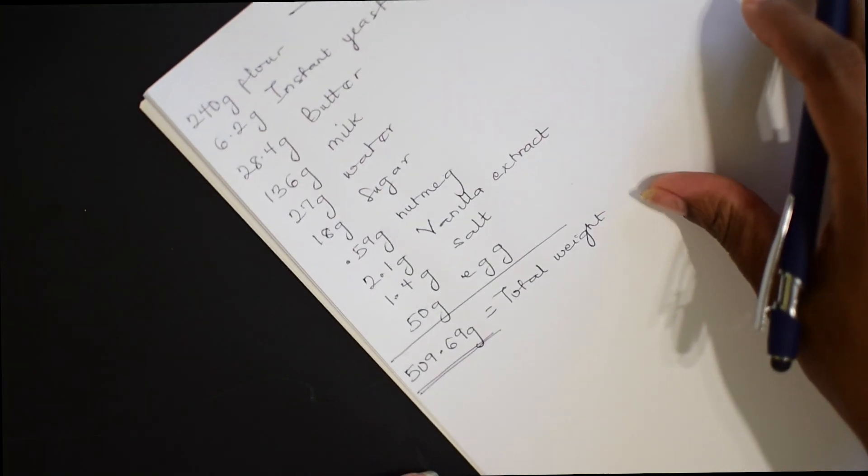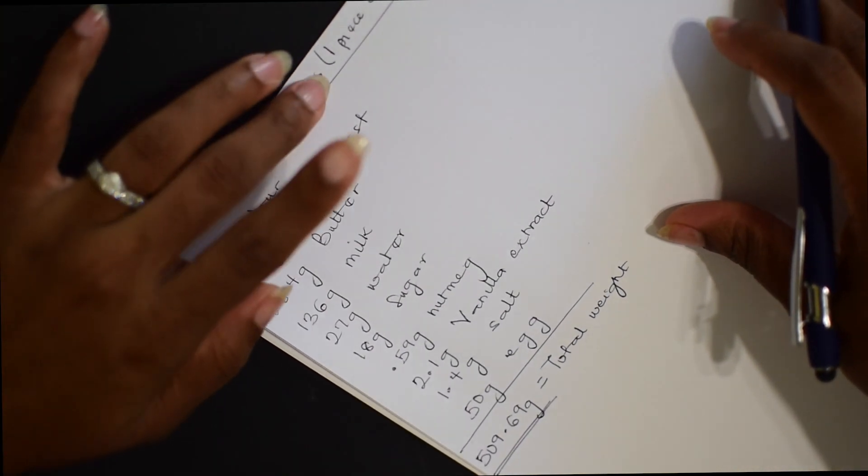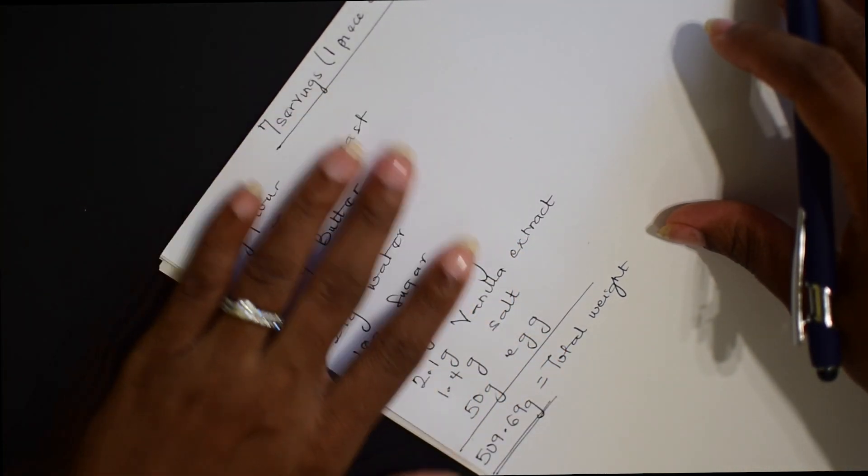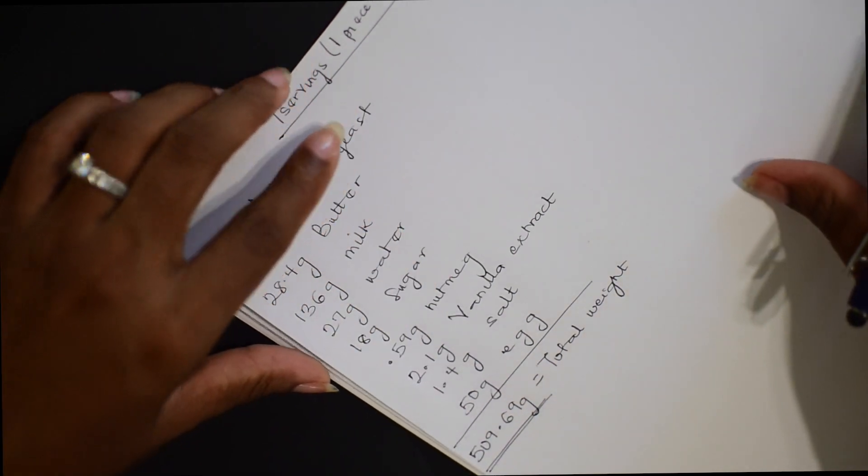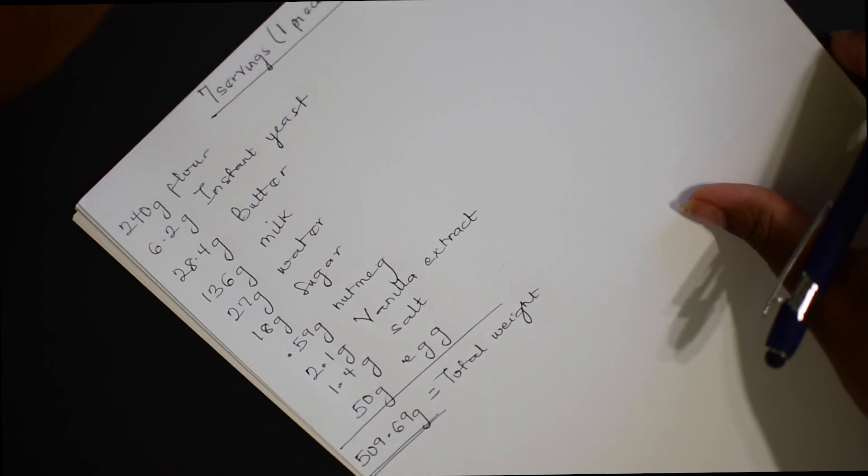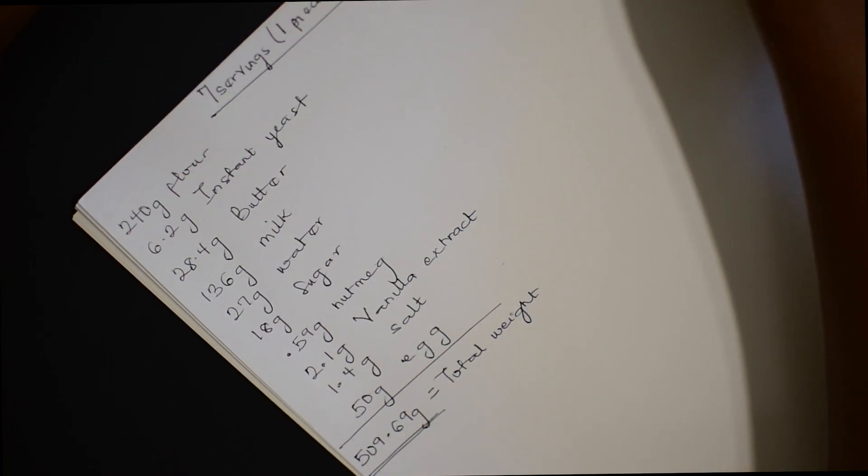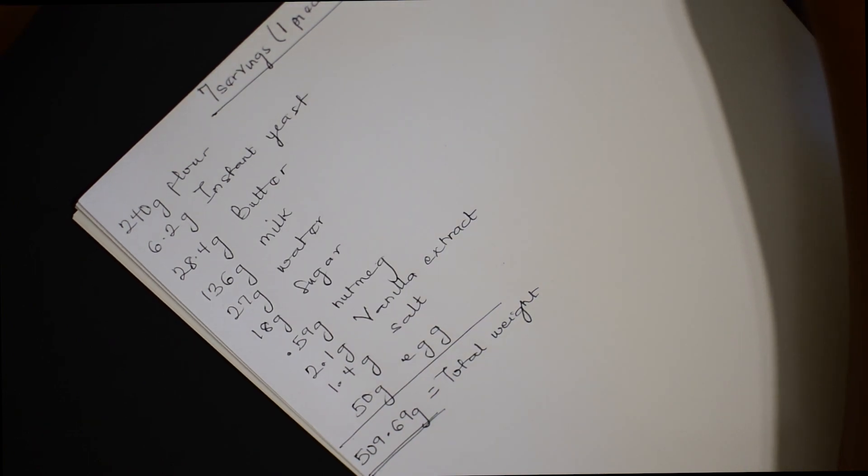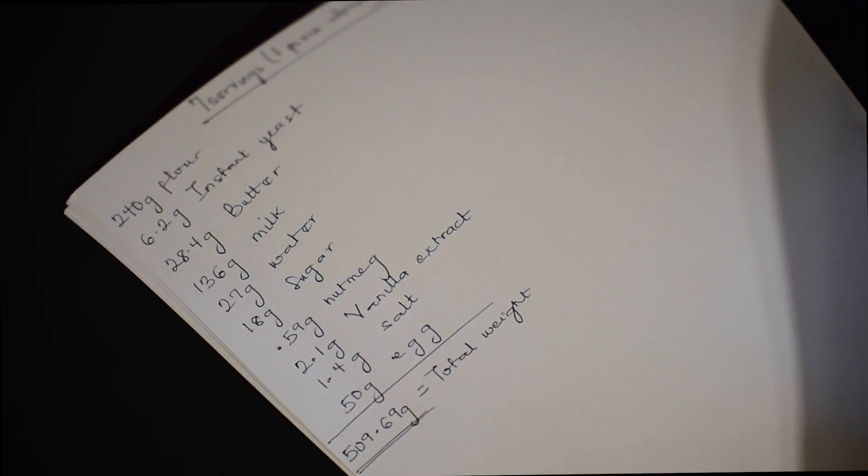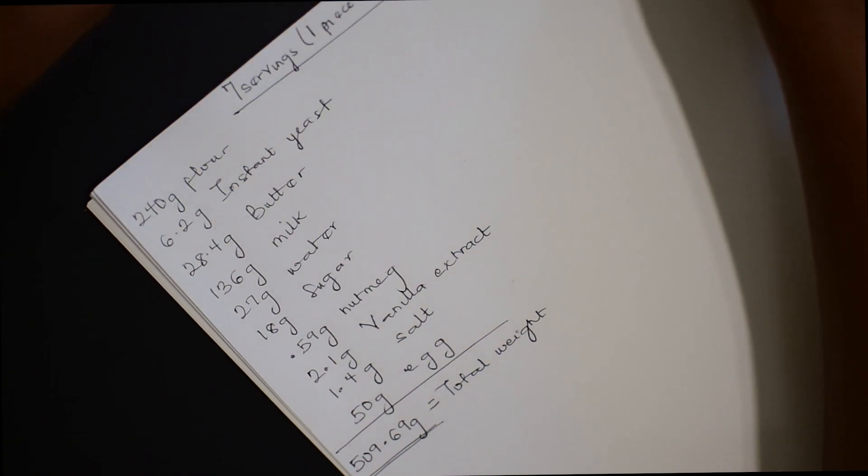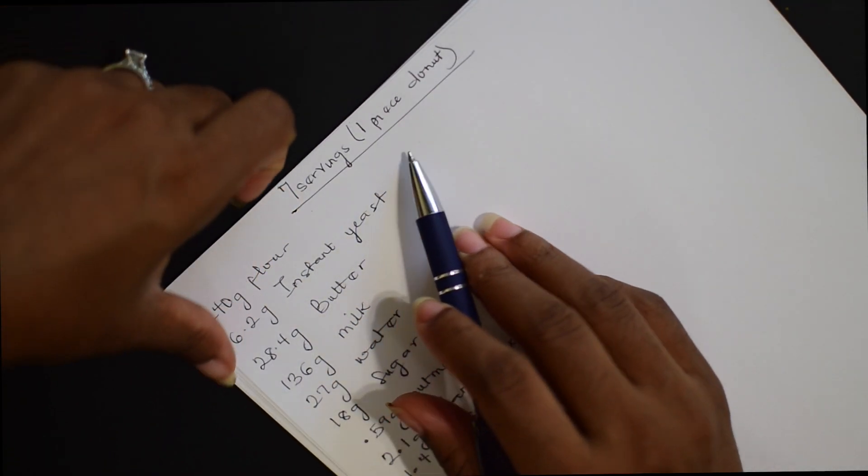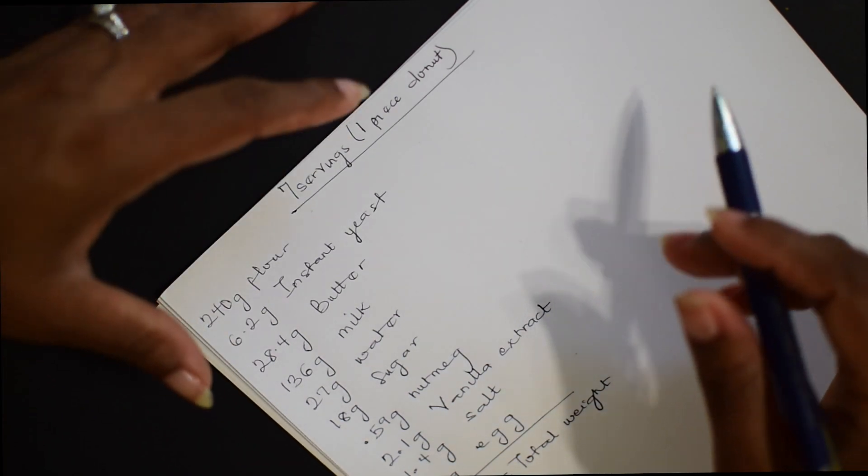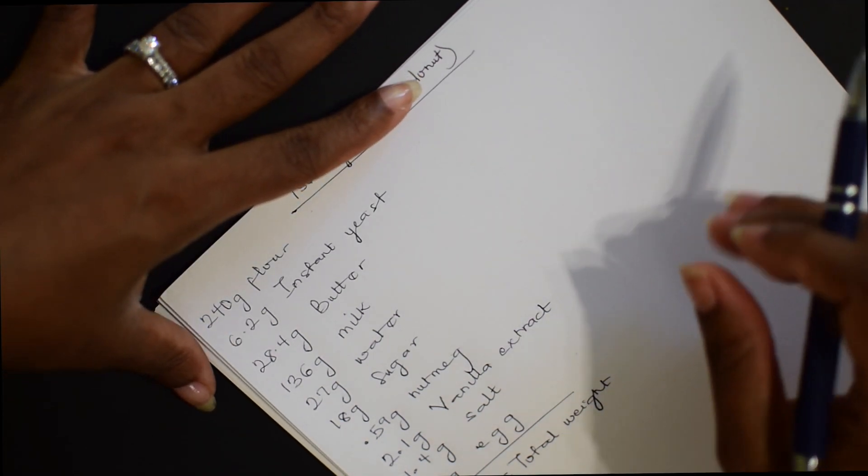So when you sum it up, what you have as a total weight will give you 509.69 grams. So this is the total weight for my recipe that gives me seven servings. So my dough, after I put everything together, weighed 509.69 grams. Now, the questions that I had asked us before when trying to scale up. Let's say for instance, I'm trying to scale up this recipe. I'm trying to increase it from seven servings to make like 12 servings.